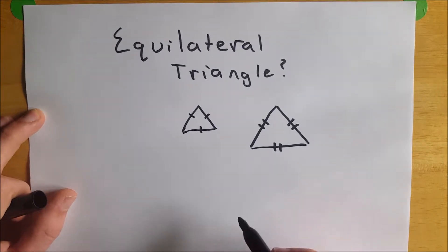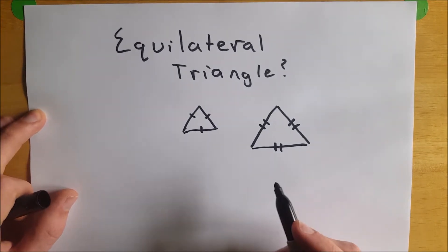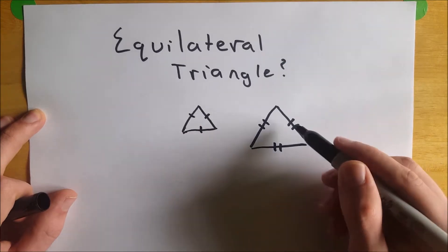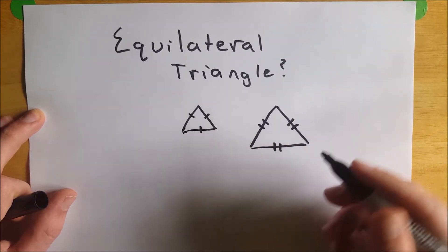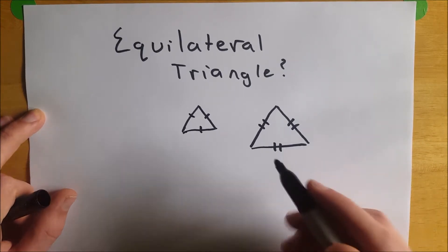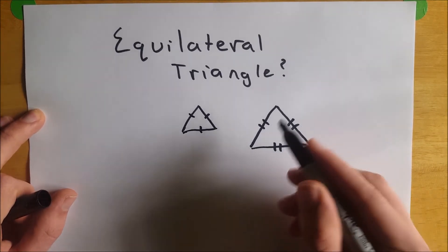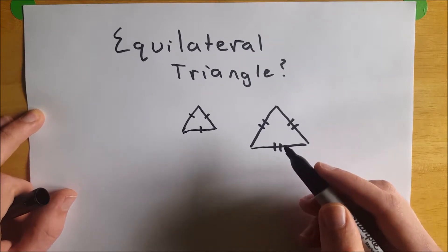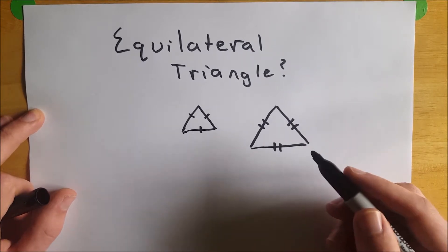So again, a triangle is an equilateral triangle if and only if all of its sides are congruent, which means they have the same length. When I say if and only if, that means that if a triangle has sides which are all congruent, that means it is equilateral and vice versa.